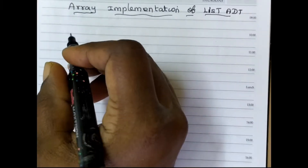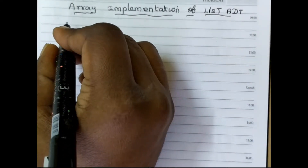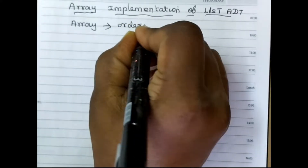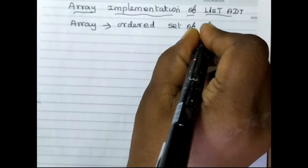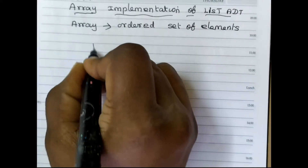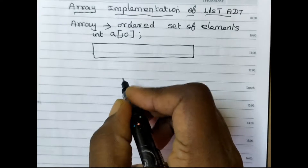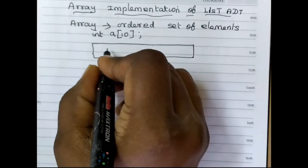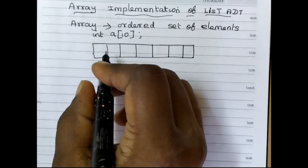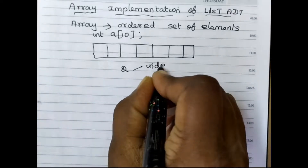In this tutorial we are going to learn about array implementation of list. First, what is an array? Array means an ordered set of elements. Array means elements are continuously stored — for example, int a[10]. Array means elements are linear and stored, and we are going to use two parts: one is index and one is element.